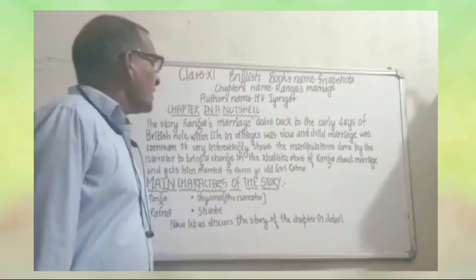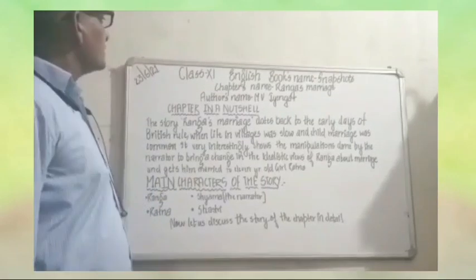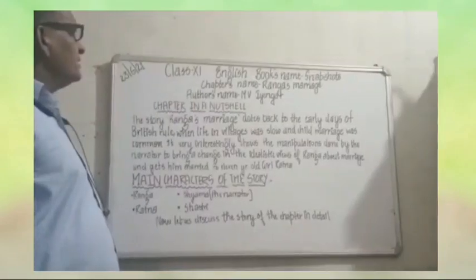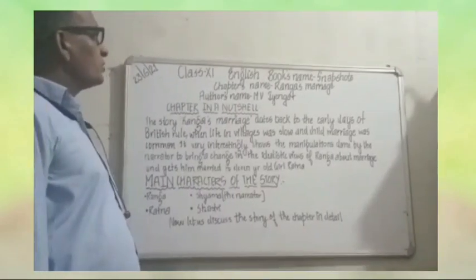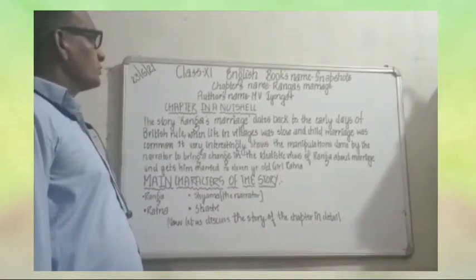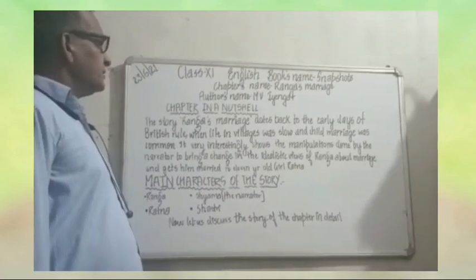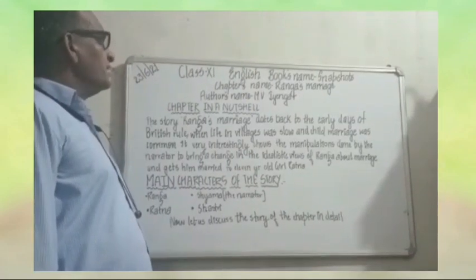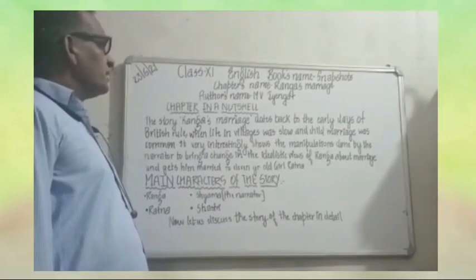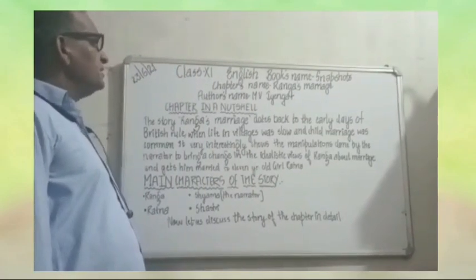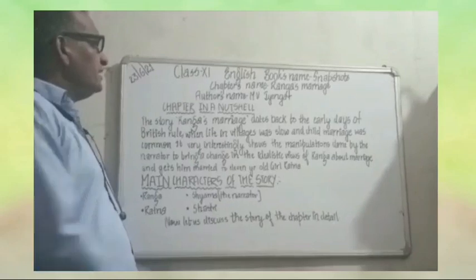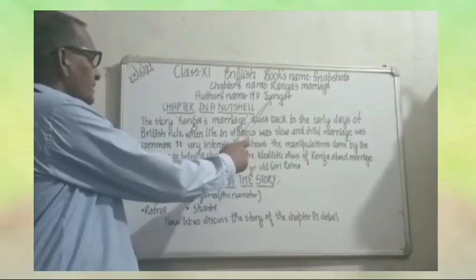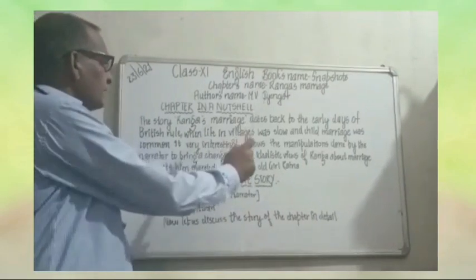Today we will discuss about Class 11 English book Snapshots. The chapter's name is Ranga's Marriage and the author's name is M.V. Heiyengar. Now, chapter in a nutshell.